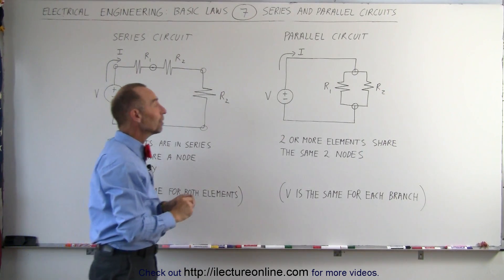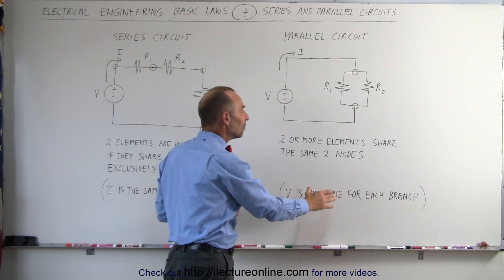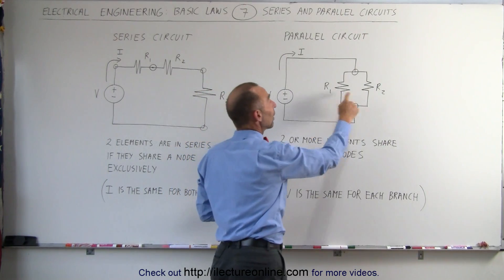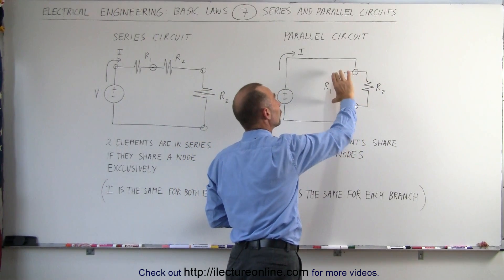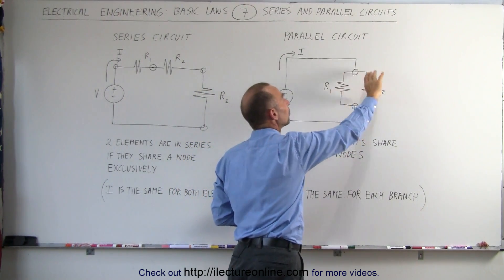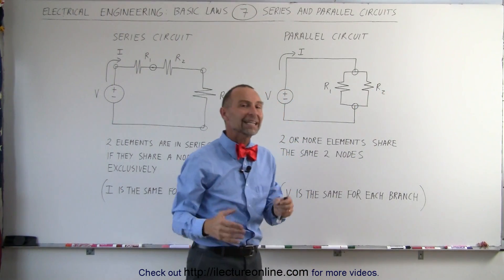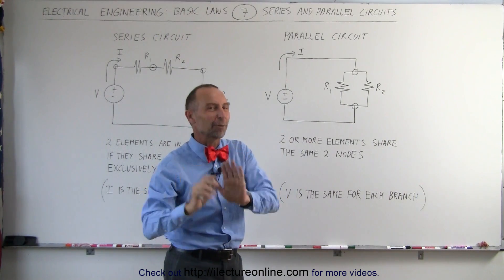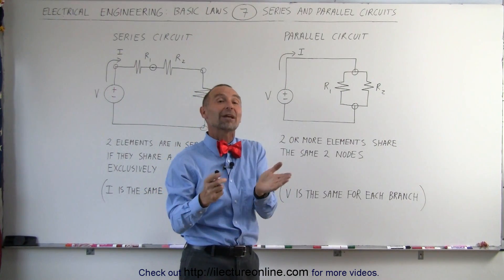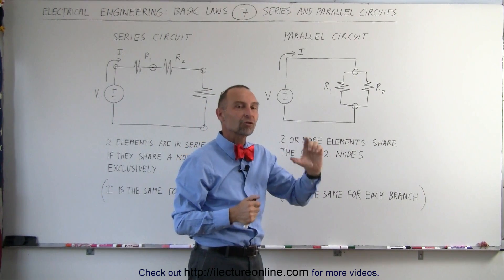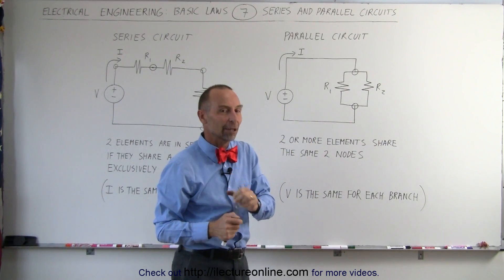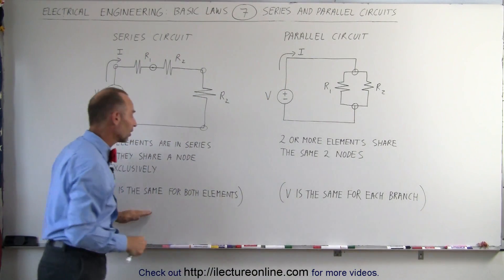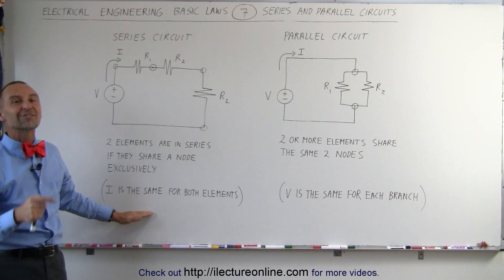In the case of a parallel circuit, you can say that the voltage is the same for each branch that is in parallel. Here we have two branches in parallel, therefore the voltage across this branch must equal the voltage across that branch. For any number of branches that are in parallel, you can always say that the voltage across each parallel branch must be equal. That is the characteristic of a parallel circuit, and this is the characteristic of a series circuit.